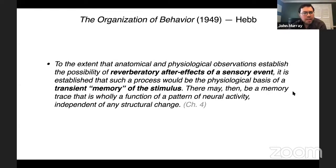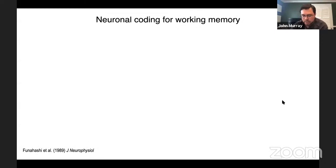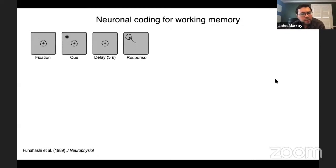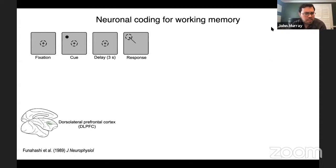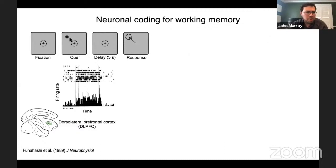The core idea is that some input to a circuit is preserved through activity for later use to guide behavior. One very influential paradigm has been the memory-guided saccade task, pioneered in Pat Goldman-Rakic's lab at Yale. Monkeys were shown a visual cue they needed to remember across a mnemonic delay, then had to make a saccadic eye movement toward it. Neurons recorded in dorsolateral prefrontal cortex were excited by the cue and then continued to show sustained, persistent activity throughout the delay until the time of the response.